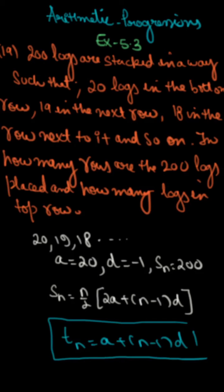This question is: 200 logs are stacked in a place with 20 logs in the bottom row, 19 in the next row, 18 in the row next to it, and so on. There are 200 logs total. Each row has fewer logs than the row below it.